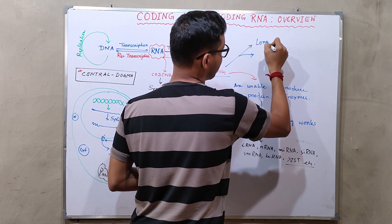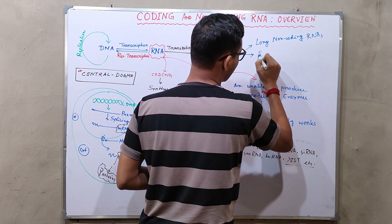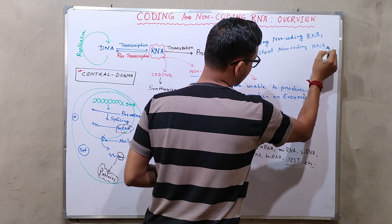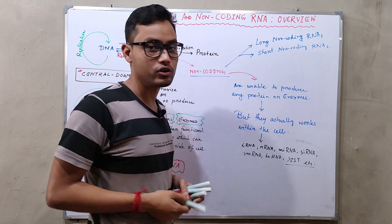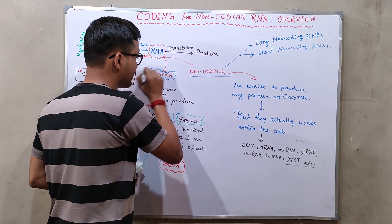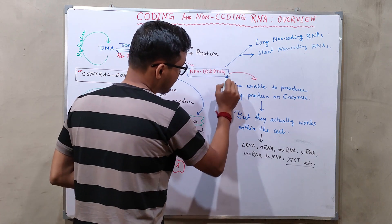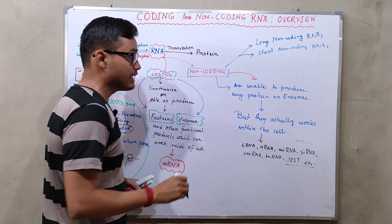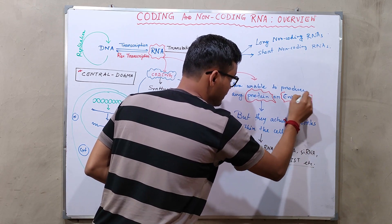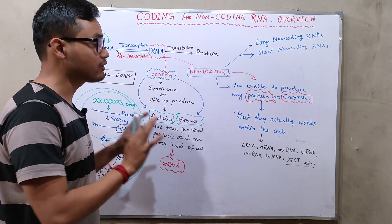The two categories are long non-coding RNAs and short non-coding RNAs. In my next video I will discuss about long non-coding RNAs and short non-coding RNAs in detail. In this video we observed that coding RNAs are those which ultimately can produce protein or enzymes, but non-coding RNAs are unable to produce any kind of proteins or enzymes — yet these RNAs are essential for a cell to perform its functions and to live.